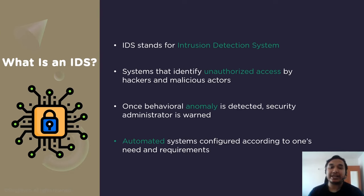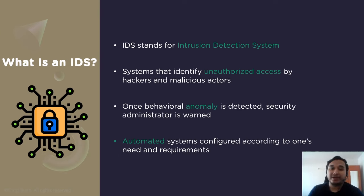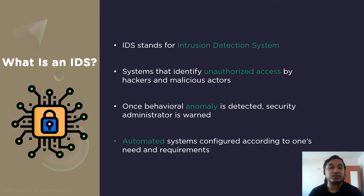If it detects this type of threat, it sends an alert to your security team so they can investigate and remediate it. Once your team receives the alert, they must act quickly to prevent an attack from taking over the system. To ensure that the IDS doesn't slow down network performance, solutions often use the switched port analyzer or a TAP access port to analyze a copy of the inline data traffic.